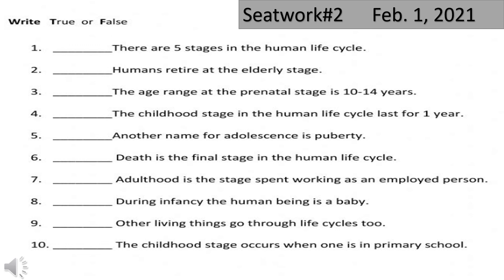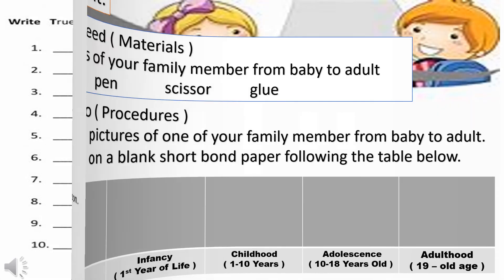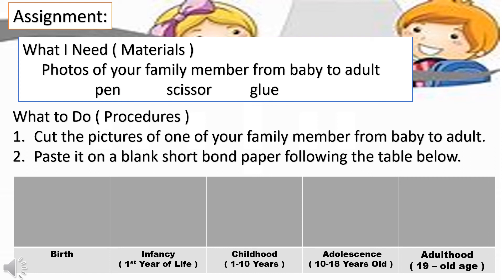Number ten: the childhood stage occurs when one is in primary school. For your assignment, the materials needed are photos of your family members from baby to adult. Paste them on a blank short bond paper following the table provided.